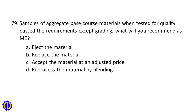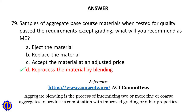Question 79. Samples of aggregate base course materials when tested for quality pass the requirements except grading. What will you recommend as a ME? A. Eject the material, B. Replace the material, C. Accept the material at an adjusted price, D. Reprocess the material by blending. Reference: ACI Committees. Aggregate blending is the process of intermixing two or more fine or coarse aggregates to produce a combination with improved grading or other properties.